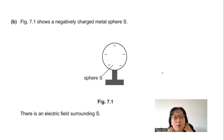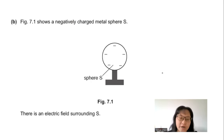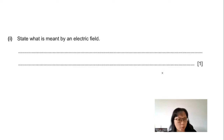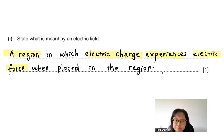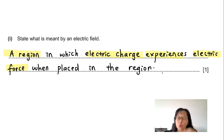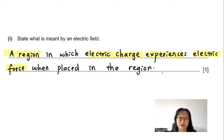Part B: Figure 7.1 shows a negatively charged metal sphere S with an electric field surrounding it. State what is meant by electric field. An electric field is a region or place in which an electric charge will experience an electric force when placed in that region.